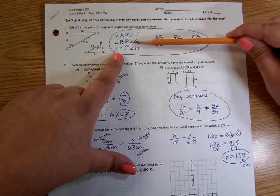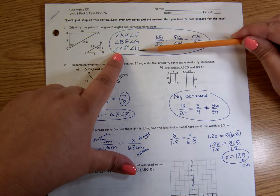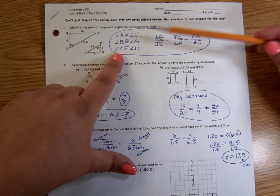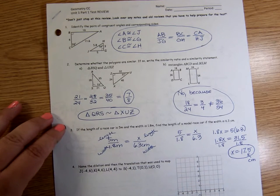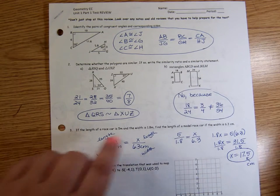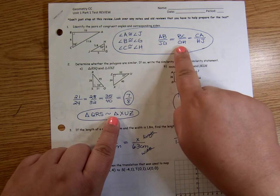And then I put B, C over G, H, and A, C over J, H. So just sticking with the same order you already have so that the letters match up appropriately. And it's okay if your order is different from mine as long as every place that you have an A that goes with a J, or every place you have a B that goes with a G, and so on.